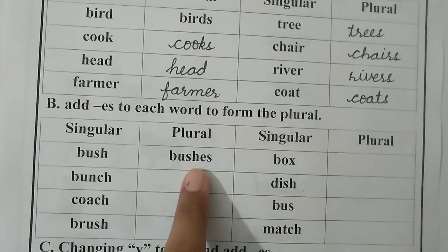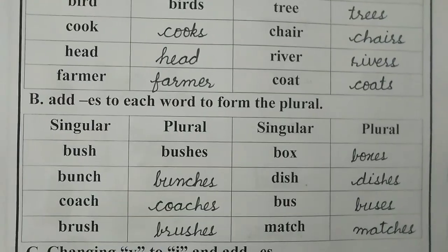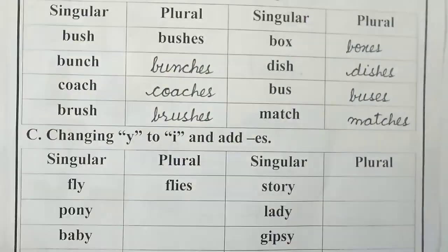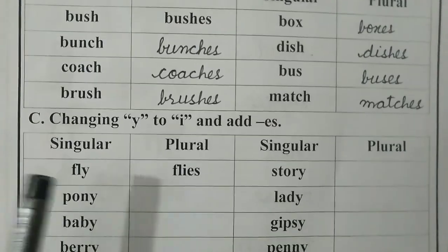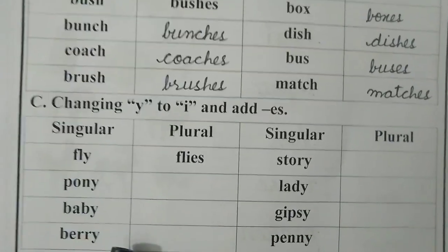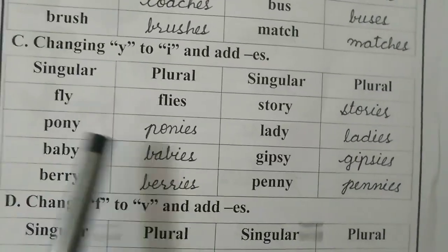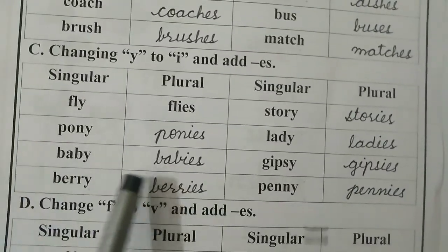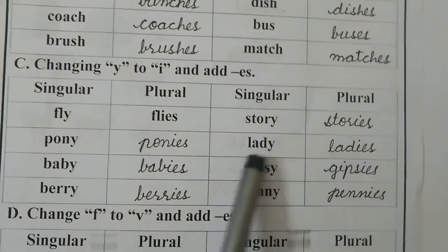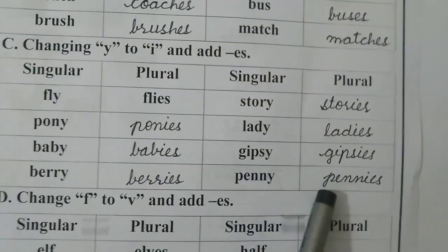Now move to Part C: changing Y to I and adding ES. We will remove Y and add IES to make these words plural. Pony — ponies. Baby — babies. Berry — berries. Story — stories. Lady — ladies. Gypsy — gypsies. Penny — pennies.